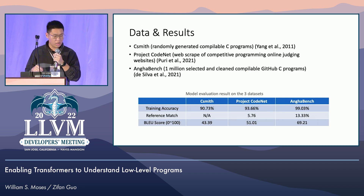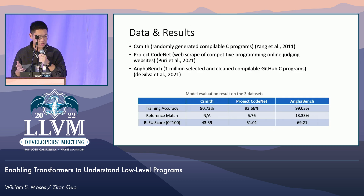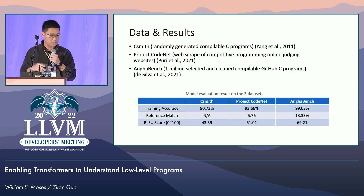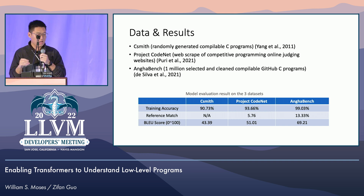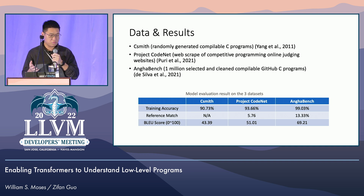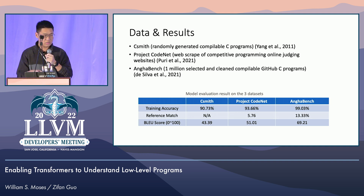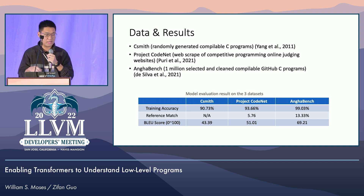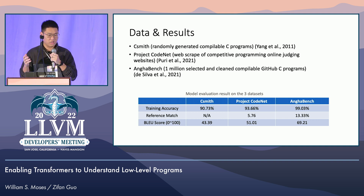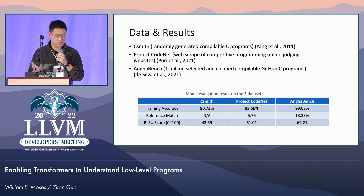We ran this model on several different datasets. We started off with CSMITH, which is a random C program generator initially used to find LLVM bugs. We did not show a lot of success on that particular dataset because even though we can get a lot of data, it is not generalizable to the LLVM language as well as humanly-written C code. So we passed on that.